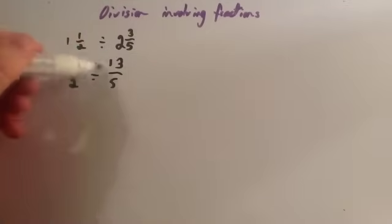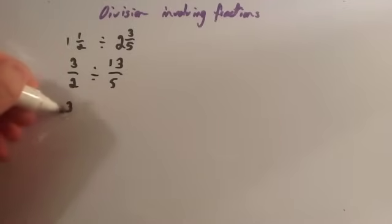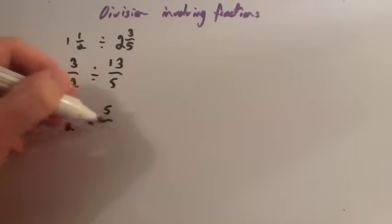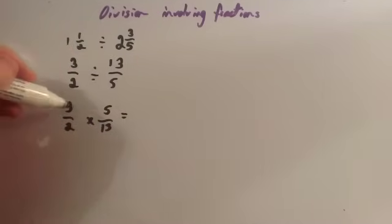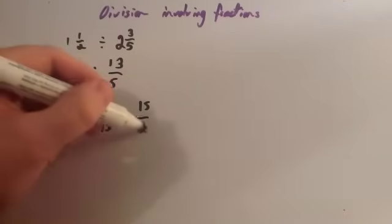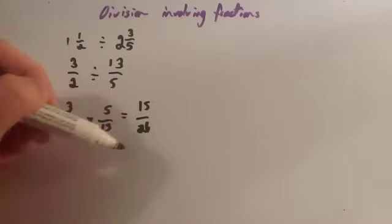You want to then take the reciprocal of the second fraction. That means flipping over the second fraction. So that's going to be three halves multiplied by 5 thirteenths. And then you just simply multiply them. 3 times 5 is 15, 2 times 13 is 26. They don't have any common factors, so the answer is 15 twenty-sixths.